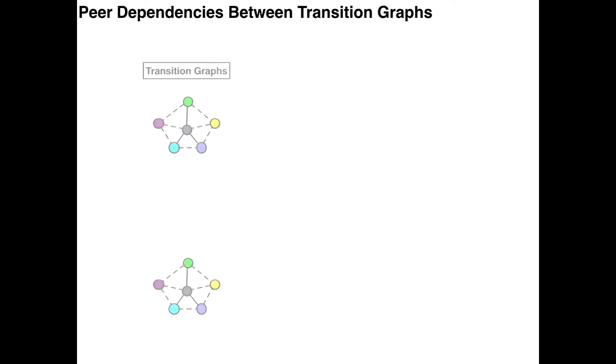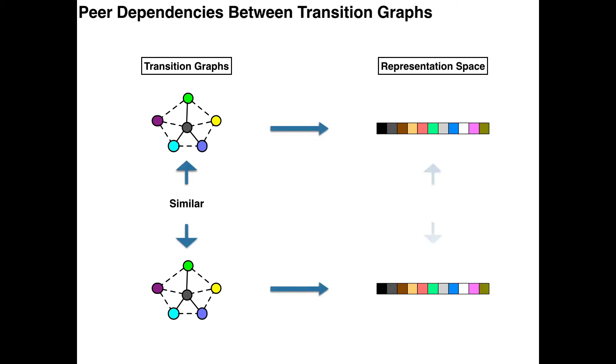Another challenge is that there are peer and temporal dependencies between driving state transition graphs. For peer dependency, if two driving state transition graphs are structurally similar, then the embeddings of two graphs are similar in the latent feature space as well.